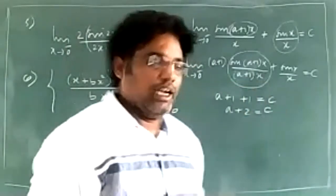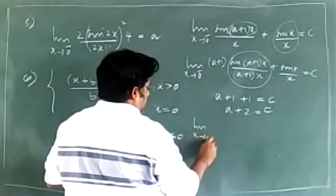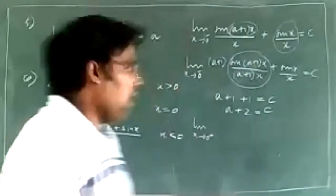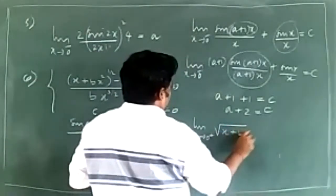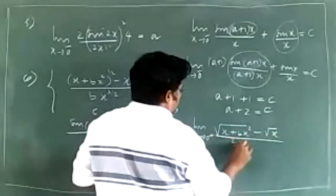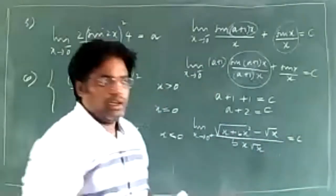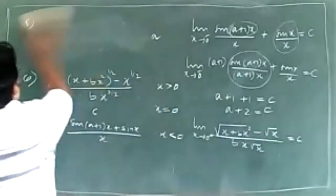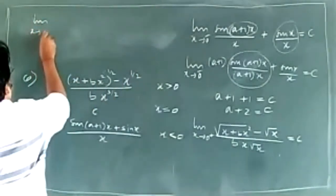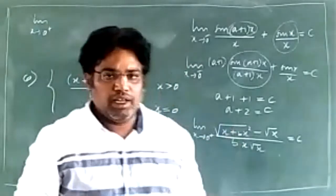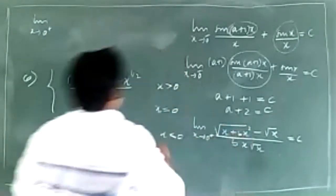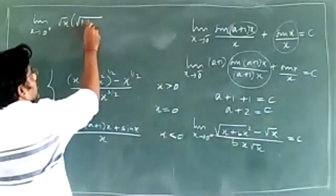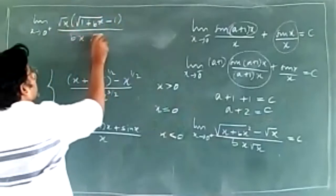Coming to the right hand limit: limit x tends to 0 plus of x plus b times x squared whole to the power of one-half. This becomes root of x plus b x squared minus root x divided by d times x. I take x common — root x is common — leaving 1 plus b x minus 1 divided by b x times root x, and that equals c.